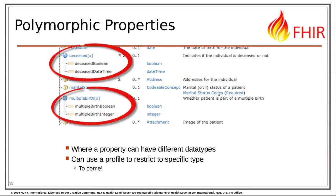Each resource in FHIR defines a set of elements described using these data types, whether primitive or complex. Sometimes an element might be polymorphic — needing to take different shapes. For example, for the patient resource in FHIR, we need to say whether a patient is deceased or not. Sometimes we want to convey more than just yes or no — sometimes we want to say when they died. So in FHIR, we have a data element written as deceased[x], where x indicates two different data types can be used: a Boolean if you just want to convey yes or no, or a DateTime to convey when they died. If I know when a person died, I know they've died — so there's no value in providing those two pieces separately. That's why they're modeled as one polymorphic data element.